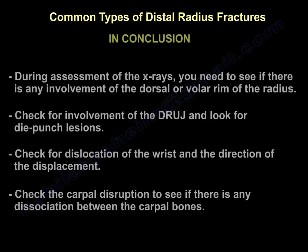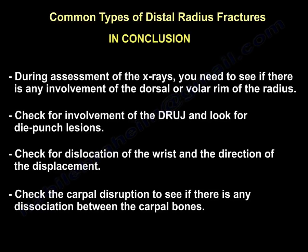In conclusion, there are many types of distal radius fractures. When assessing X-rays, check for involvement of the dorsal or volar rim of the radius, the DRUJ, and die-punch lesions. Look for dislocation of the wrist and the direction of displacement. Also check for carpal disruption to identify any dissociation between the carpal bones.